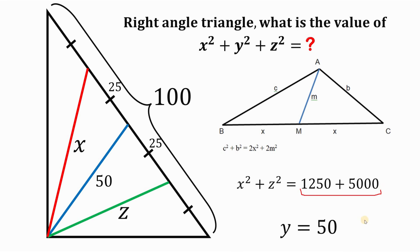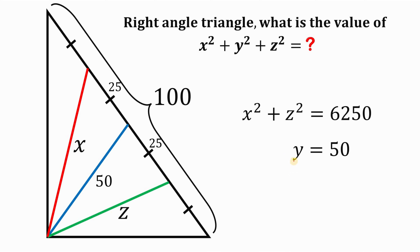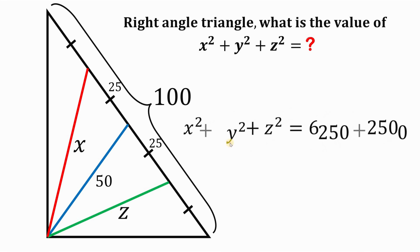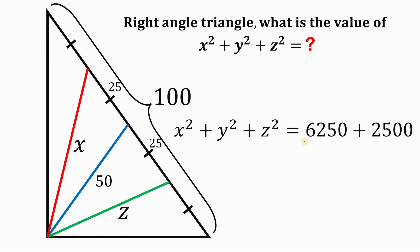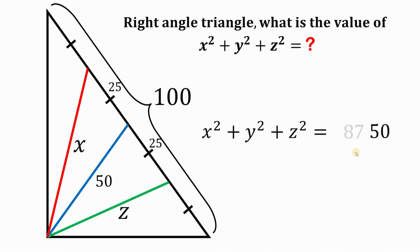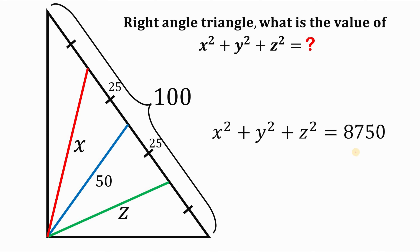We now have x squared plus z squared, and we know that y equals 50. Squaring both sides, y squared equals 2,500. Adding the two equations together, x squared plus y squared plus z squared equals 6,250 plus 2,500, which gives us 8,750.